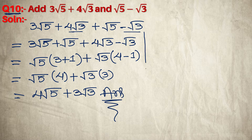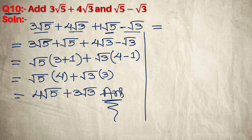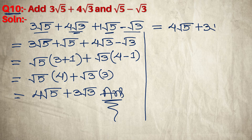We can also solve this directly. Looking at the like terms: root 5 and 3 root 5 — that is 1 root 5 and 3 root 5, so this gives 4 root 5. The other like terms are 4 root 3 minus root 3, which gives 3 root 3. So the answer is 4 root 5 plus 3 root 3.